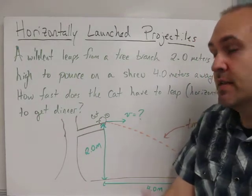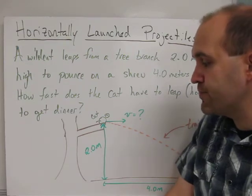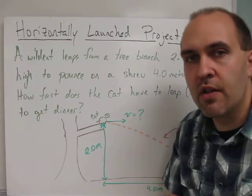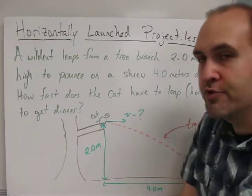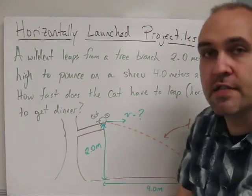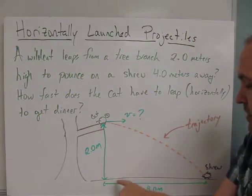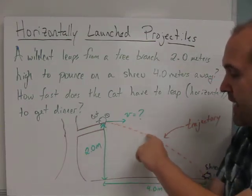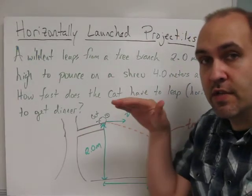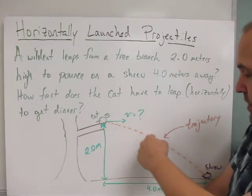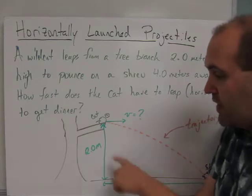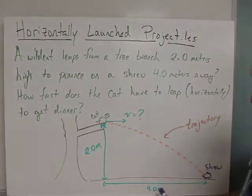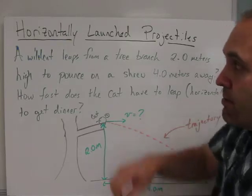The first step in solving a problem like this is to make a sketch just to kind of get your mind around what's going on in the problem and what you need to find. So I've done that here. I drew a crude tree and a tree branch, and that's my wildcat. The shrew is way over here, and then I drew the trajectory that the cat would take. Projectiles take trajectories that are parabolas, so it'll go sideways and fall down and hopefully reach dinner. I labeled the vertical height which is two meters and the horizontal distance which is four meters.